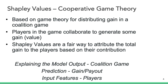The key idea behind cooperative game theory is that there is a game in which players are cooperating to obtain an outcome or a gain. The players of the game form coalitions to achieve the gain. Some players may contribute more to the coalition than others. And Shapley Values is a fair way to attribute the total gain to the players based on their marginal contributions to a specific coalition.